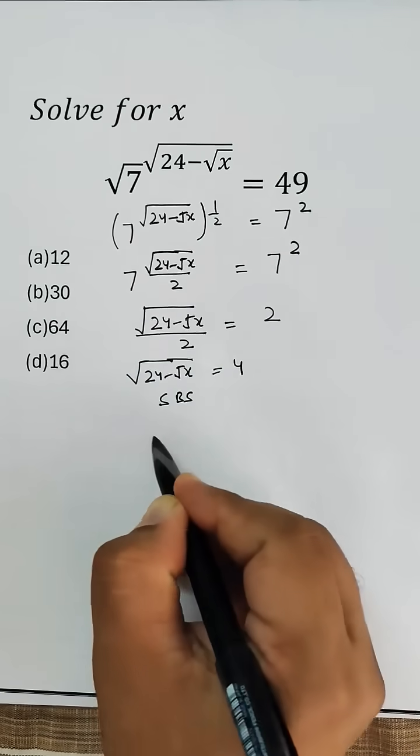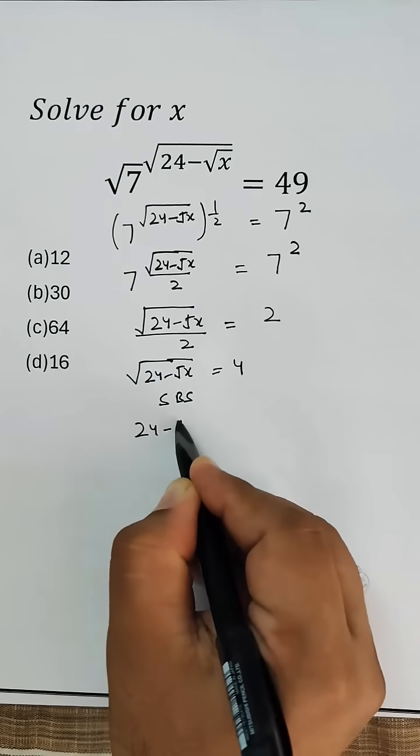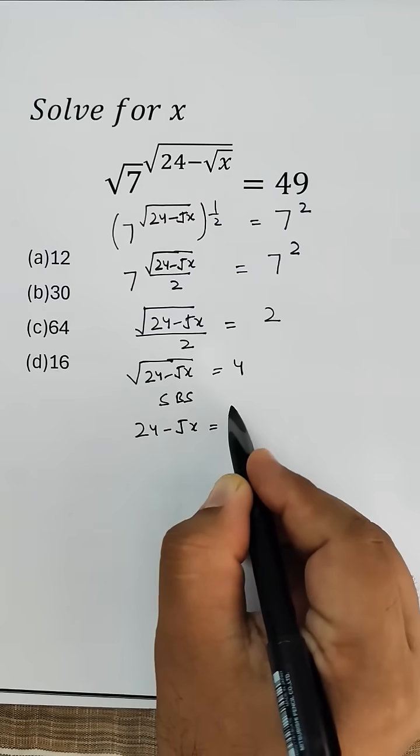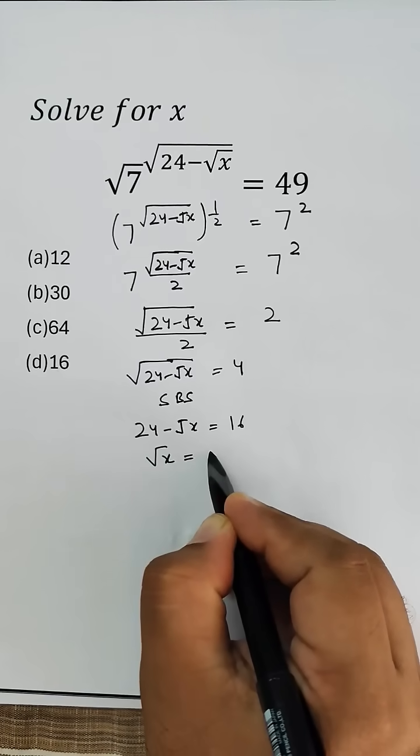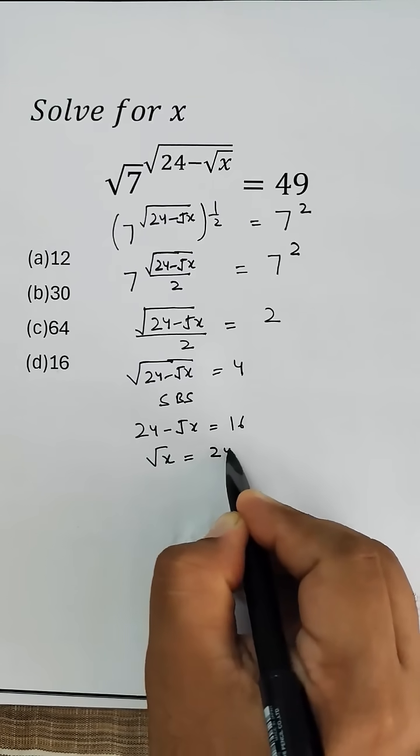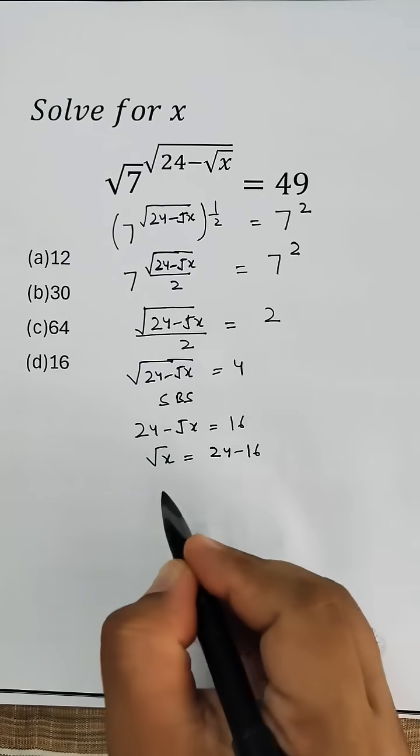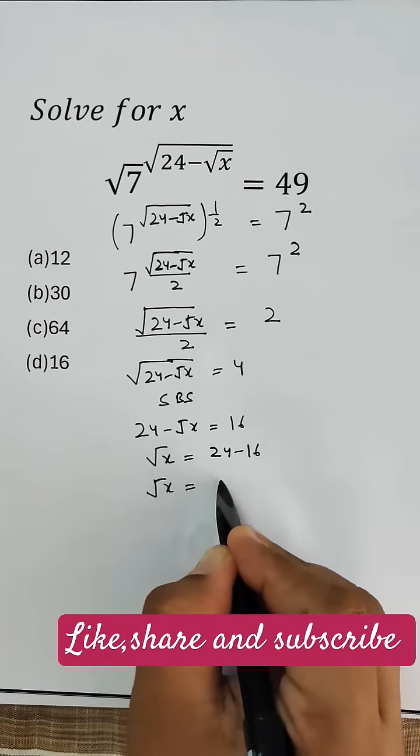Now squaring both sides, we get 24 minus root x equals 4 squared, which is 16. So square root of x equals 24 minus 16, which means square root of x equals 8.